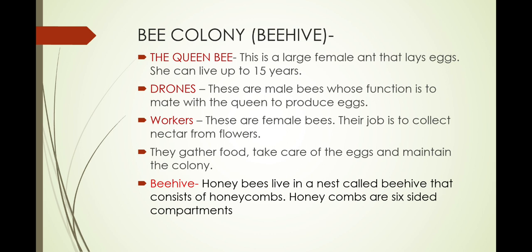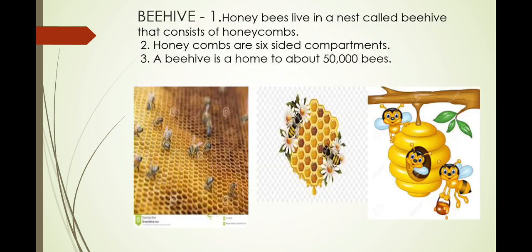Ants and bees are such small creatures and yet they live in cooperation. The beehive is the nest where honeybees live, and it consists of honeycombs. Honeycombs are six-sided compartments. A beehive is a home of about 50,000 bees.